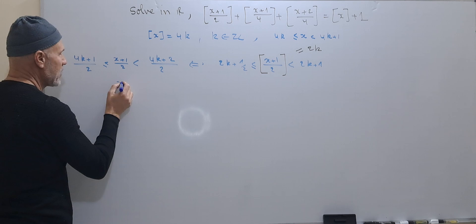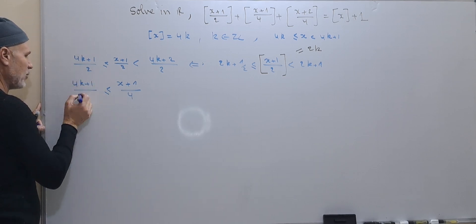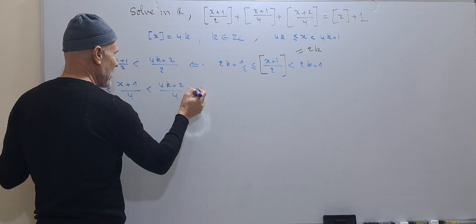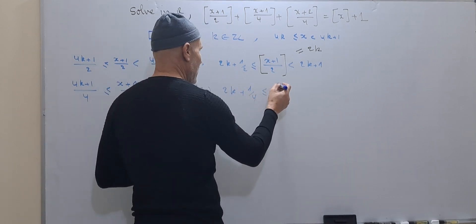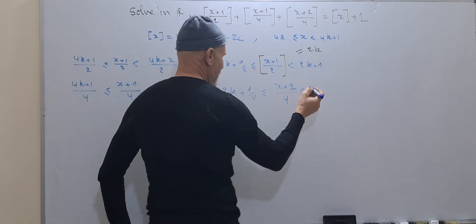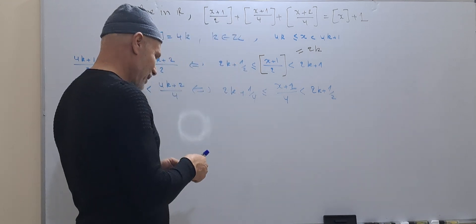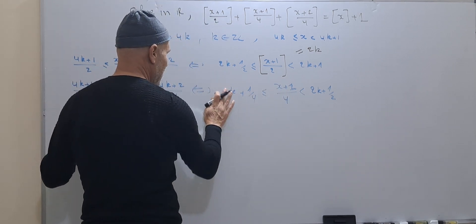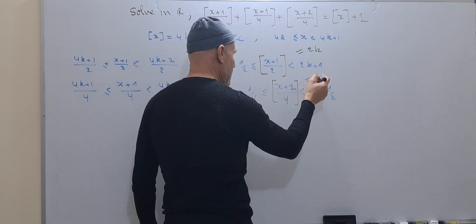And x + 1/4 satisfies 4k+1/4 ≤ x+1/4 < 4k+2/4, which is equivalent to 2k+1/4 ≤ x+1/4 < 2k+1/2. Dividing by 2 gives us just k on both bounds, and in this case the integer part of x+1/4 is equal to k.